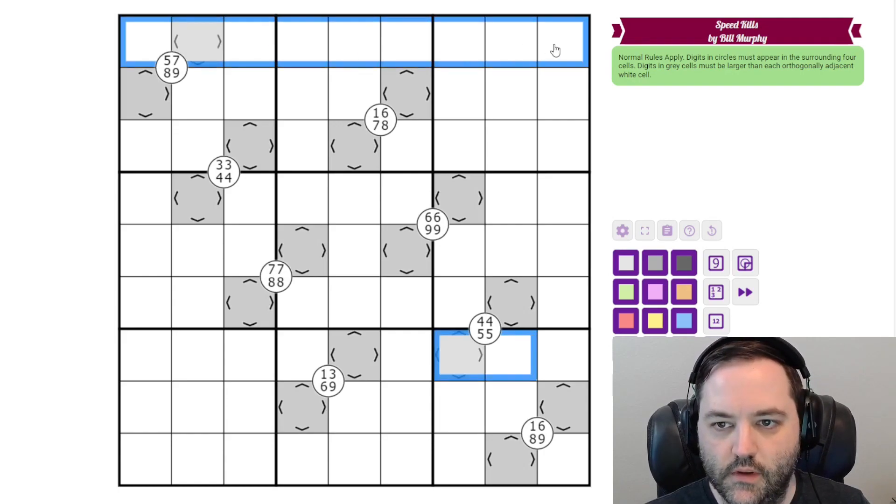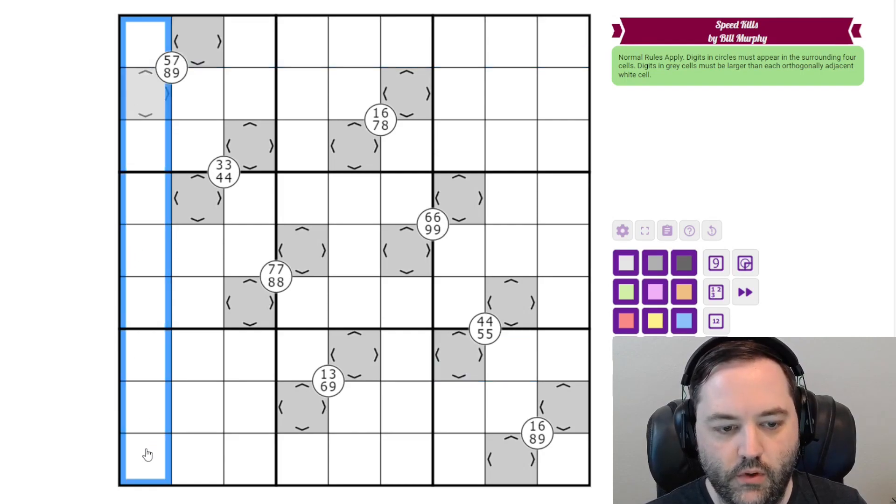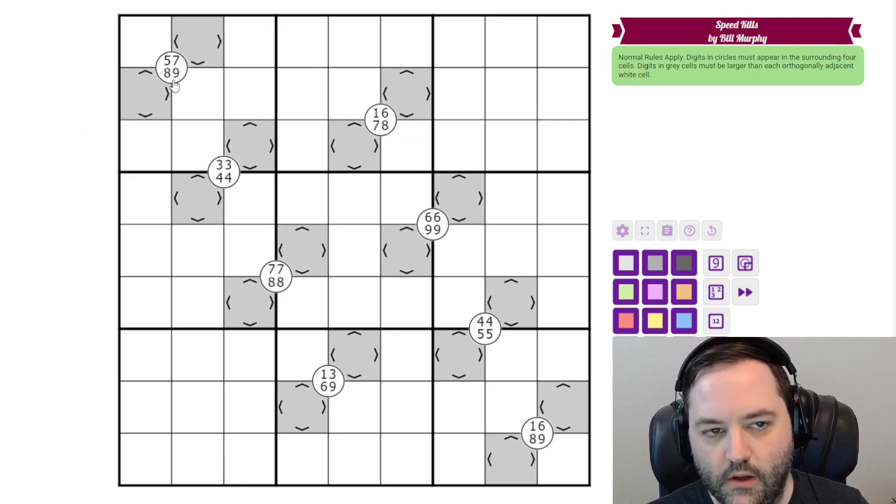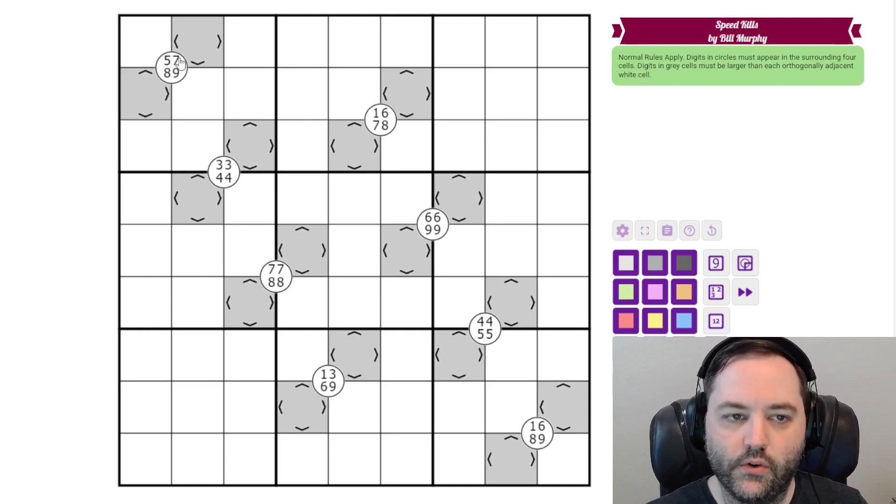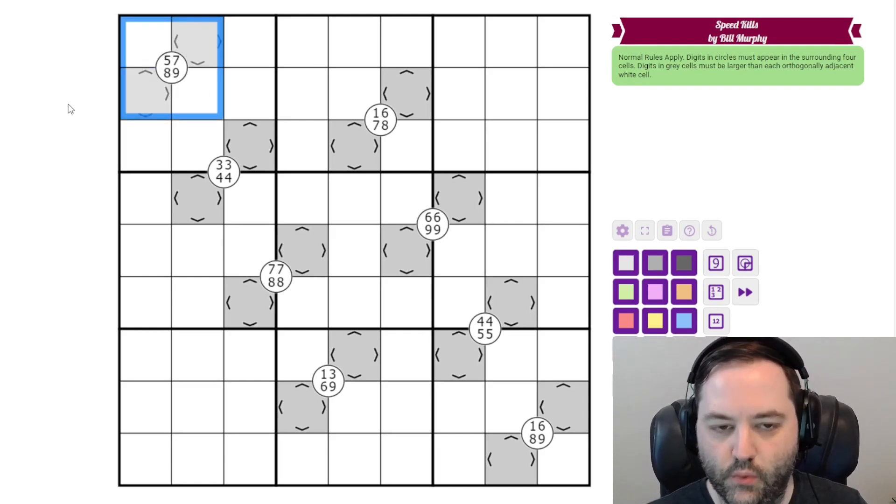But this is a Fortress Quads Sudoku, so normal Sudoku rules apply: 1 to 9 in each row, column, and 3x3 box. We have some circles and the digits that appear in the circles must appear in one of the four surrounding cells.